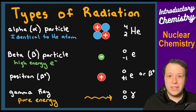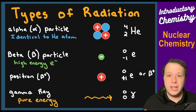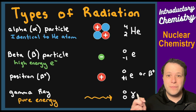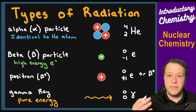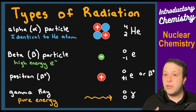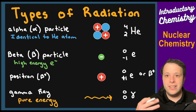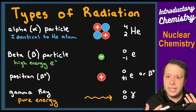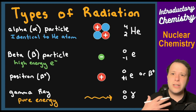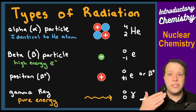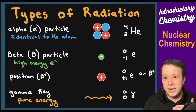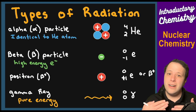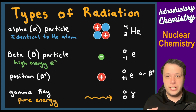The last one is the gamma ray, shown at the very bottom. The gamma ray is a pure form of energy — all it is is just a release. This could be used for chemotherapy, or to try to destroy certain harmful things found in the body. It is just pure energy.